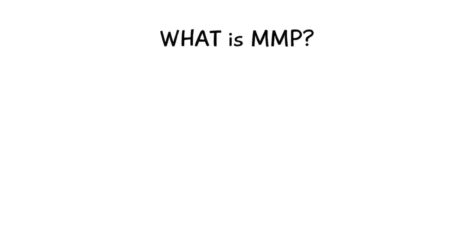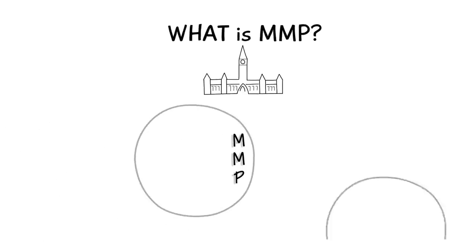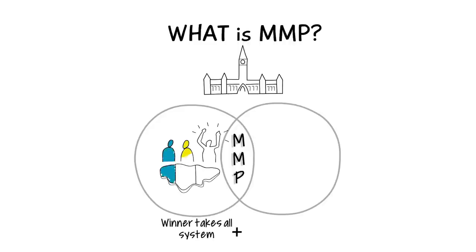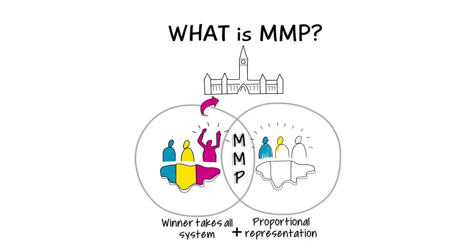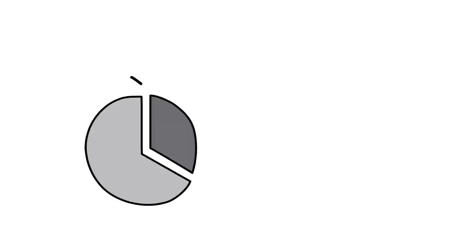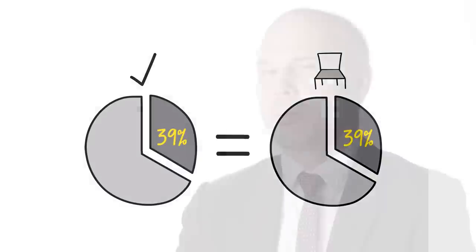So, what is MMP? What does it look like? Basically, MMP combines our existing single-member, winner-take-all voting system with an element of proportional representation. The end result is that the number of MPs elected to Parliament will match the share of votes cast for the different parties. If voters cast 39% of the votes for one party, that party will gain 39% of the seats — no more, no less.